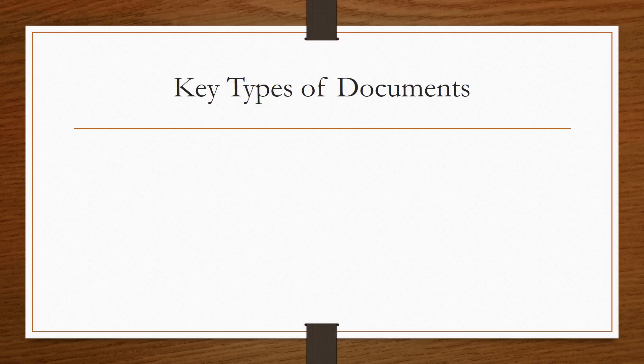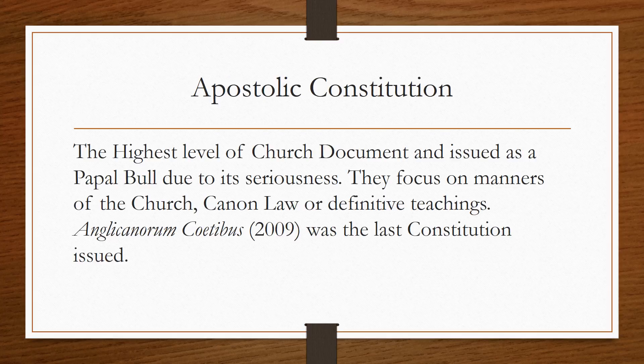The key types of documents: the highest ranking is an apostolic constitution, and that's where it talks about key factors that the church has to address. The last one in 2009 was focusing in particular on Anglican priests that wished to become Catholic and the rules and procedures they had to follow. That's why it ranked so high, because it incorporated church and canon law.